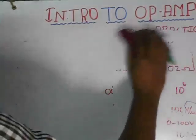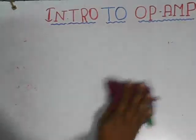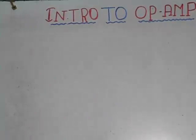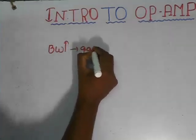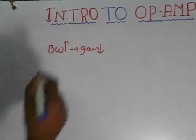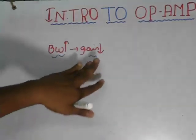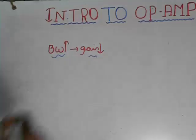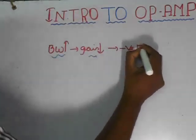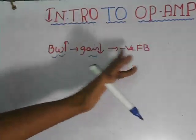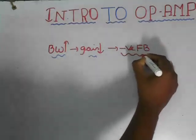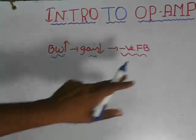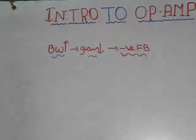To increase bandwidth, you should reduce gain — this is an interesting concept in the operational amplifier. Reducing gain is in our hands: if you provide negative feedback to the op-amp, it will definitely reduce the gain and therefore bandwidth increases. This is an important concept in operational amplifiers and it revolutionized our electronic era.